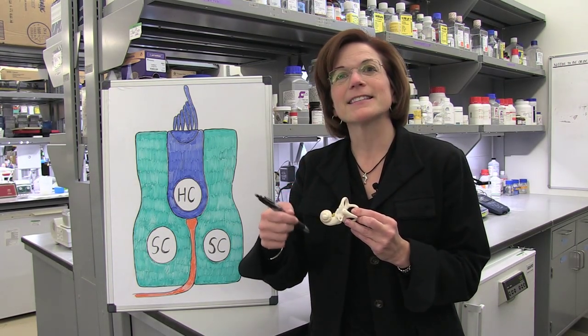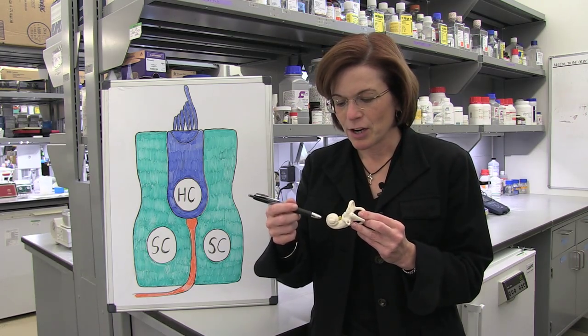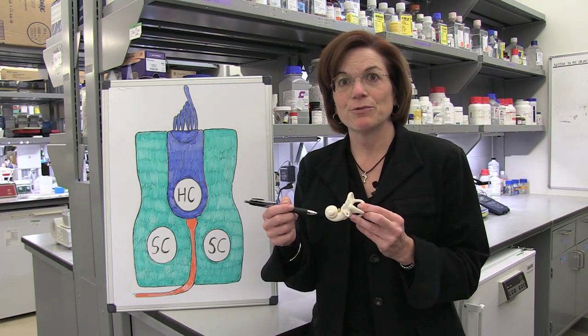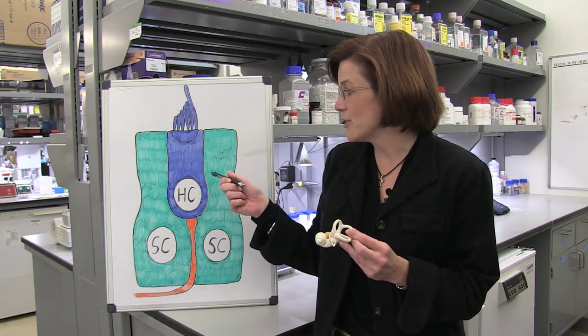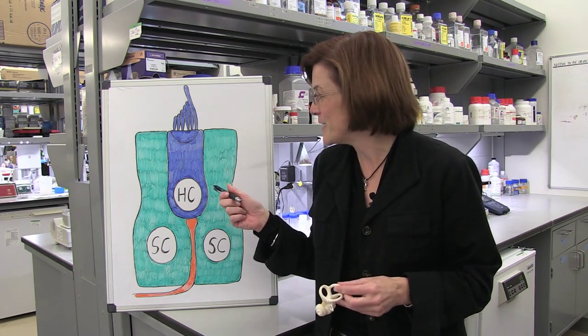Each of these six sensory organs in the inner ear utilizes as the sensory receptor cell a cell type that's called a hair cell, which is diagrammed here.